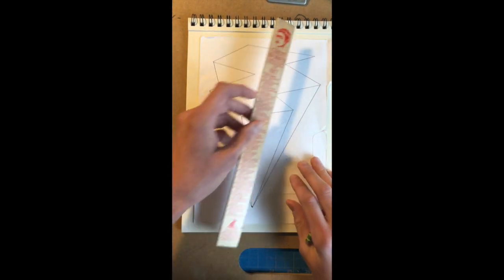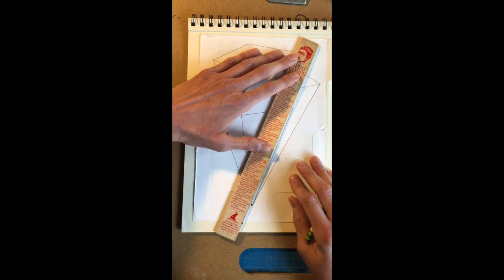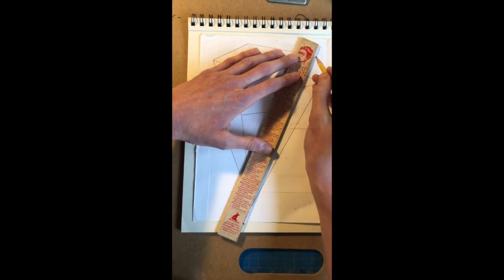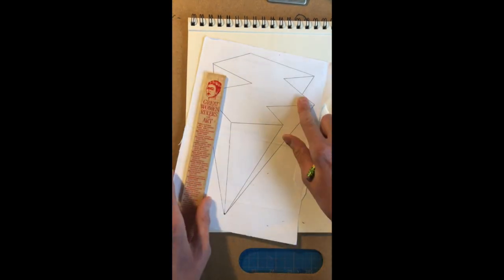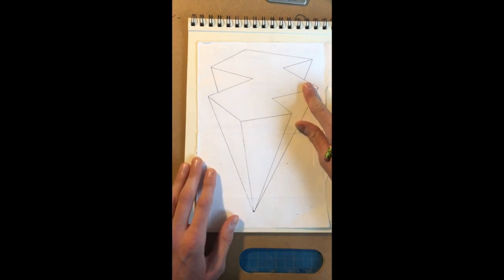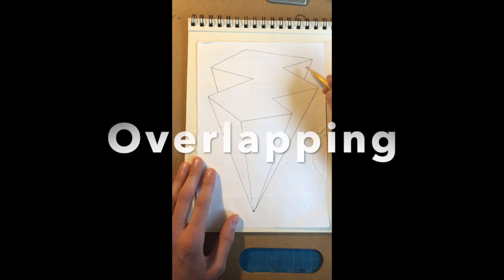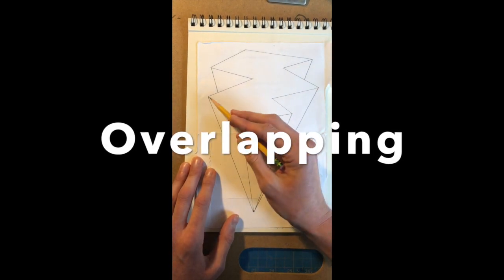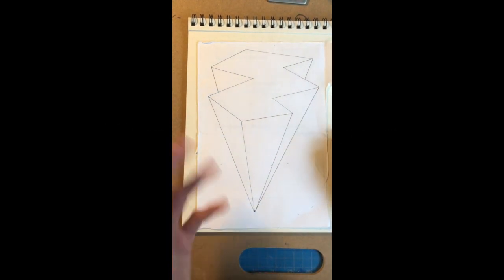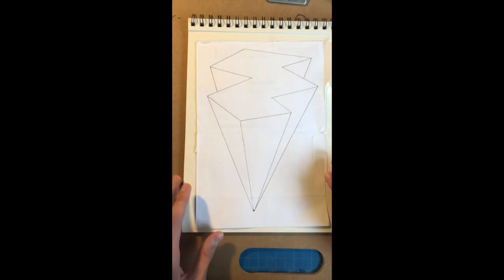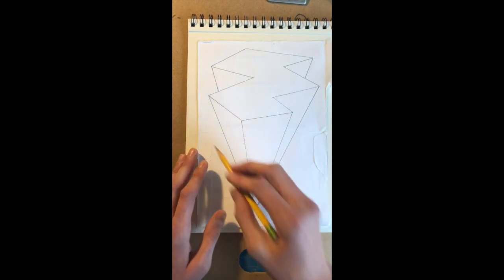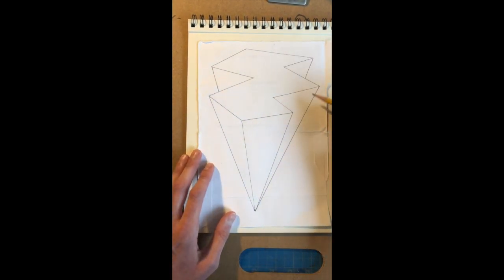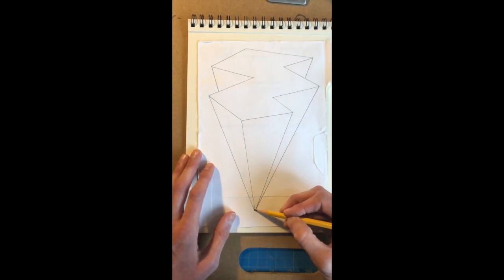Or on this corner, I'll connect the corner to the vanishing point and I'll just start and then stop where it hits the shape itself. So now I have the sense of overlapping, which is another tool we use to create a sense of depth, which helps create the sense of three dimensions on a two-dimensional surface.